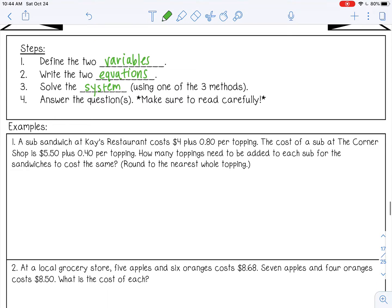Alright, so number one, a sub sandwich at Kay's restaurant costs $4 plus $0.80 per topping. The cost of a sub at the corner shop is $5.50 plus $0.40 per topping. How many toppings need to be added to each sub for the sandwiches to cost the same? Okay, so let's define our two variables.